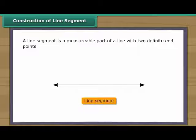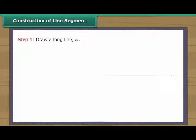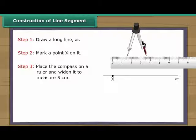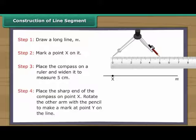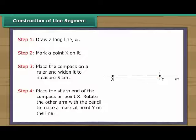Construction of line segment. A line segment is a measurable part of a line with two definite end points. We use a ruler and a compass to construct a line segment. Let us construct a line segment five centimetres long. Draw a long line M and mark a point X on it. Place the compass on a ruler and widen it to measure five centimetres. Place the sharp end of the compass on point X. Rotate the other arm with the pencil to make a mark at point Y on the same line. We have a line segment XY which is five centimetres long.